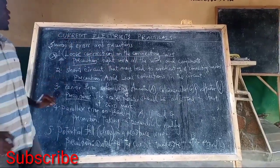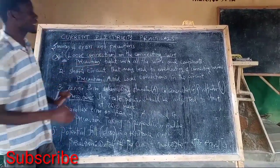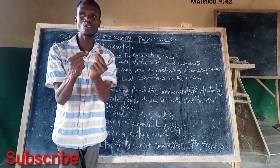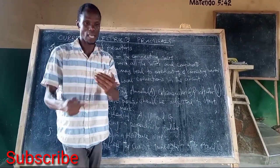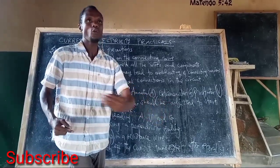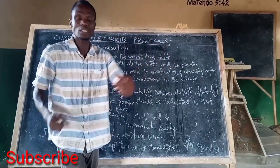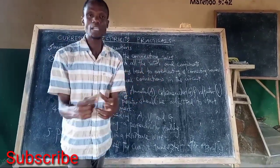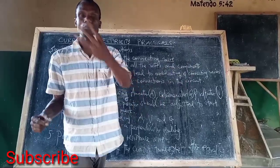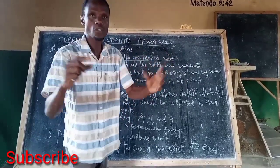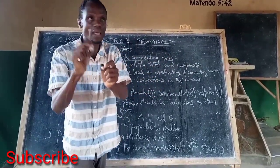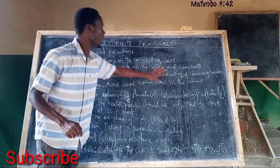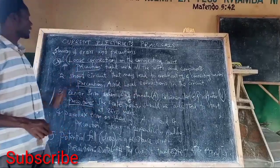Kwa ya kwanza niyo - hakikisha nyaya zanako zote umezifunga vizuri, hili kwakisha kwamba sasa hile circuit iwe complete kwa sababu zile wires ziwe connected na zile other components kama ammeter, voltmeter, galvanometer, and so forth, ziwe connected tightly with the connection wire. Kwa hiyo, kwa avoid hiyo, ni lazima tight well all the wires and components.